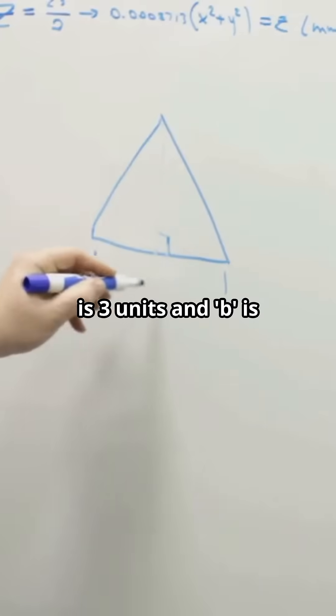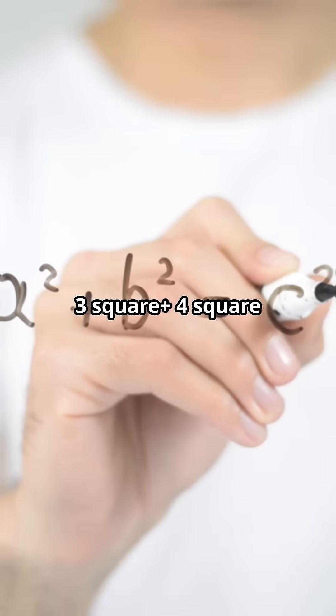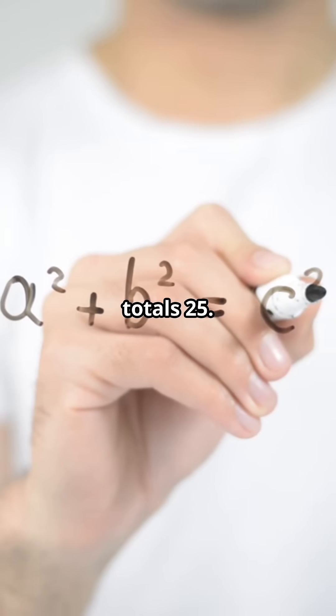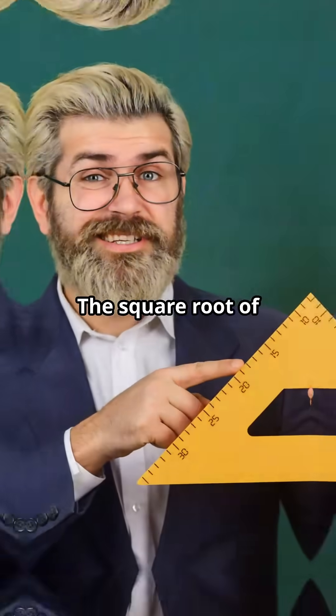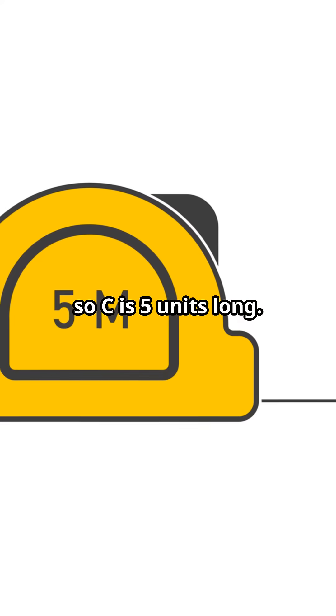Imagine this. If A is 3 units and B is 4 units, you do the math. 3² + 4² equals 9 + 16, which totals 25. So C² is 25. The square root of 25 is 5, so C is 5 units long.